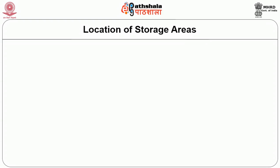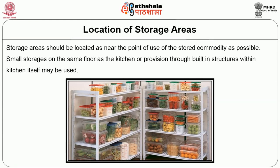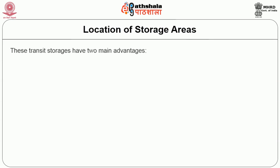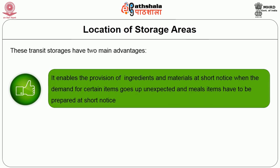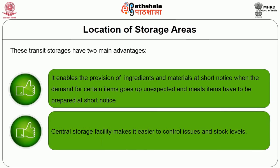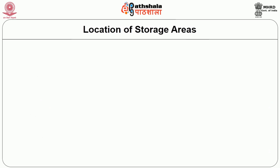Storage area should be located as near the point of use of the stored commodity as possible. Small storages on the same floor as the kitchen, or provision through built-in structures within the kitchen itself, may be used as transit storages. These transit storages have two main advantages: firstly, they enable provision of ingredients at short notice when demand goes up unexpectedly; and secondly, central storage facility makes it easier to control issues and stock levels.